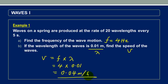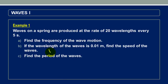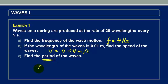The speed of the waves is 0.04 meters per second. We had calculated the frequency of the waves as 4 Hz. Now we are required to calculate periodic time. We recall that periodic time is related to frequency: periodic time is equal to the inverse of the frequency, or 1 over 4, which gives us 0.25 seconds.